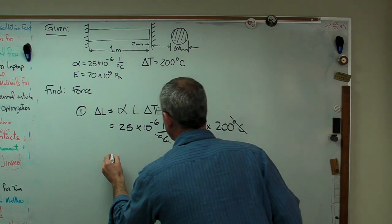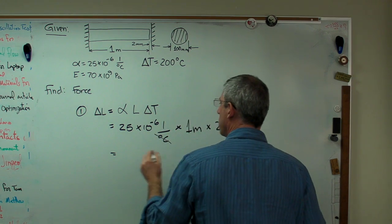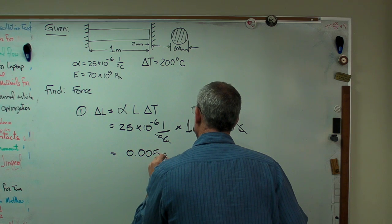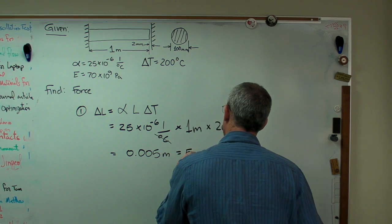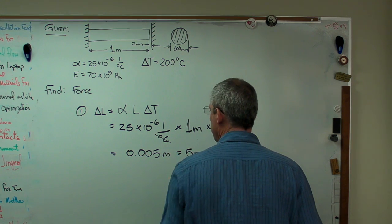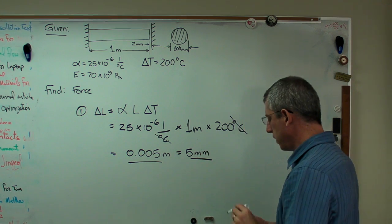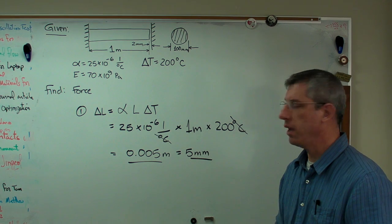So I'm going to cancel out the degree C there. I'm going to get an answer in meters. Well, I like that. So if you multiply this out, you get 0.005 meters, and that's 5 millimeters. About that far. A little less than a quarter inch if you want to do it in English units.